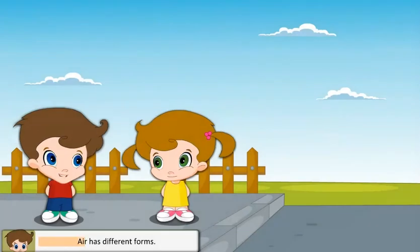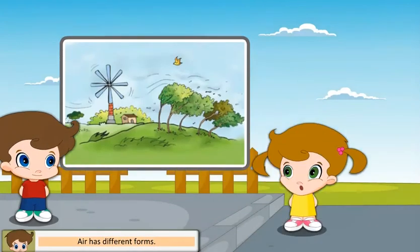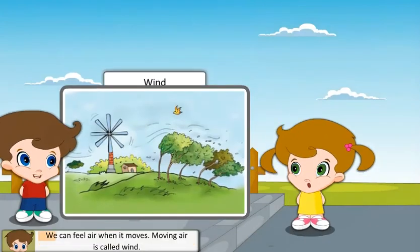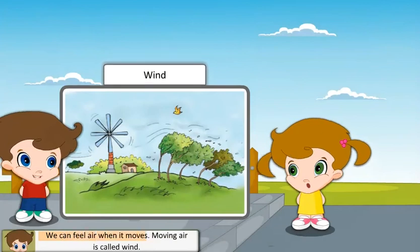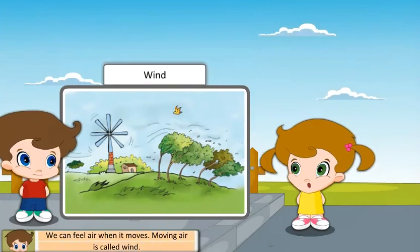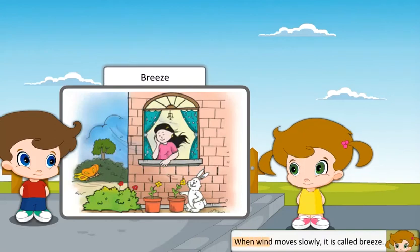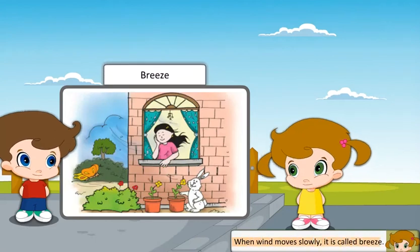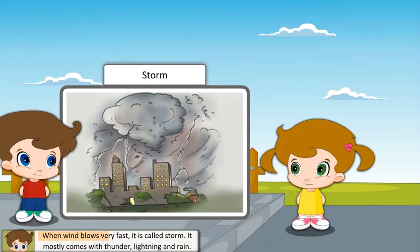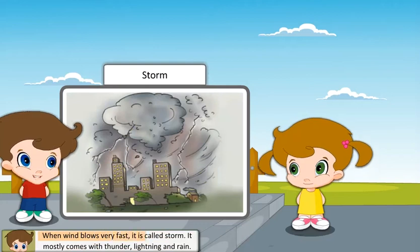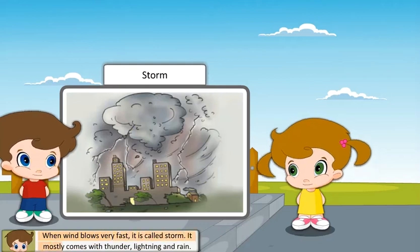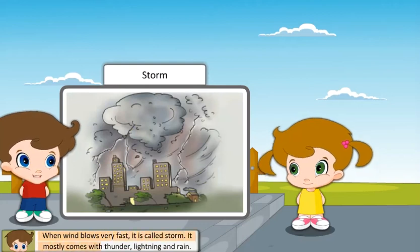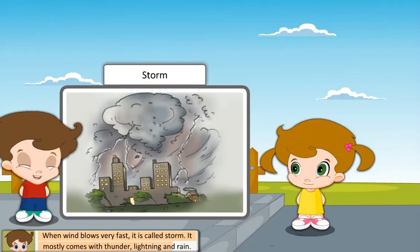Air has different forms. We can feel air when it moves. Moving air is called wind. When wind moves slowly, it is called breeze. When wind blows very fast, it is called storm. It mostly comes with thunder, lightning and rain.